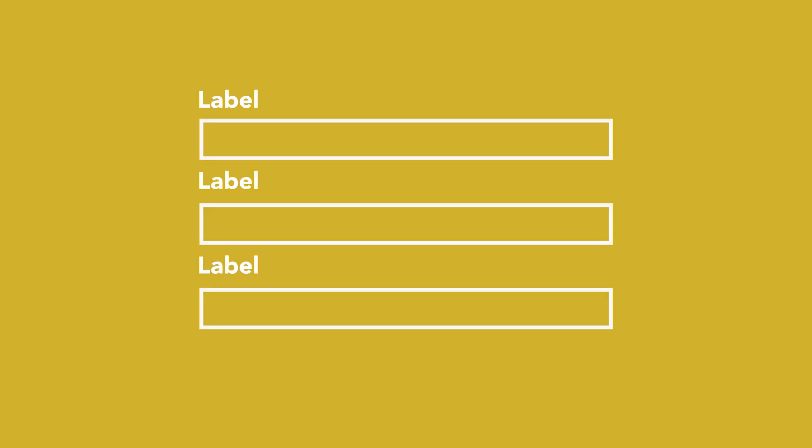First of all, make sure that the placement of the labels makes it completely obvious which label goes with which field. Labels should always be closer to the field they describe than they are to any other fields. Don't create ambiguity by showing a label that is equally distant to two different fields.